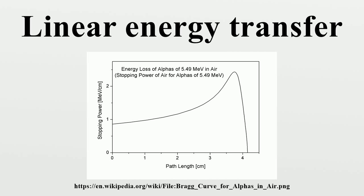Since LET varies over the particle track, an average value is often used to represent the spread. Averages weighted by track length or weighted by absorbed dose are present in the literature, with the latter being more common in dosimetry. These averages are not widely separated for heavy particles with high LET, but the difference becomes more important in other types of radiation.